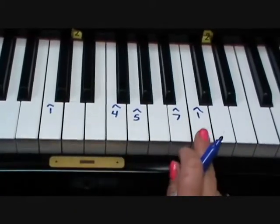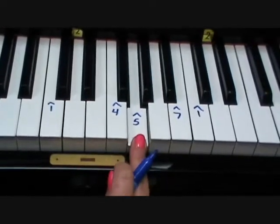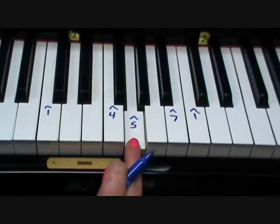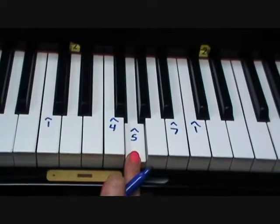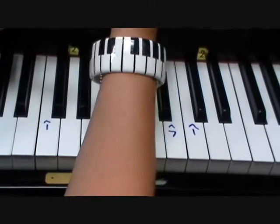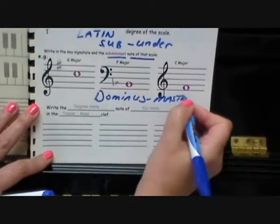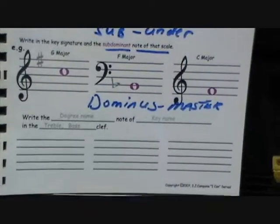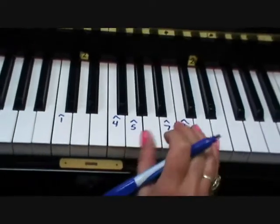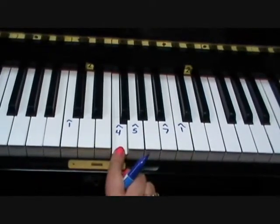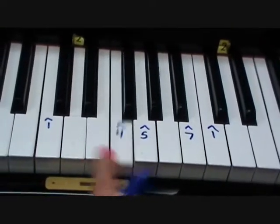Subdominant: if we go 1, 2, 3, 4, 5 — dominant means 5. The dominant, which is probably one of the most important notes, means in Latin 'dominus,' meaning master. A chord can be built anywhere from this dominant key, that's why it's called the master key. So the subdominant is below or under the dominant, or if we go 4 notes up, you have to remember it's 4.